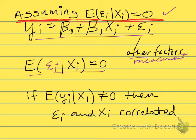On average, the error terms conditional on the xi are equal to zero. There's some positive, there's some negative, so they average out to be zero.